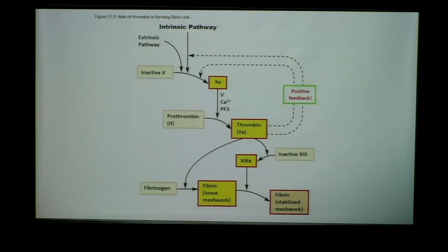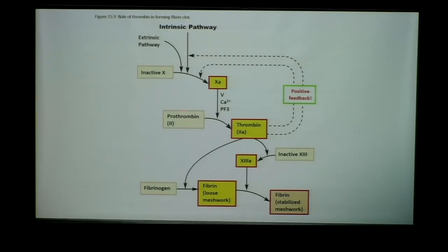These factors are not numbered in any order that makes sense — they're numbered according to the order they were discovered by physiologists, so don't try to make a pattern of the numbering. What I want you to focus on are the cofactors involved beyond factor 10. Both pathways converge at factor 10, converting the inactive form to 10a. That then requires calcium and protein factor 3 in order to activate prothrombin to thrombin — that's the point I really want you to focus on.